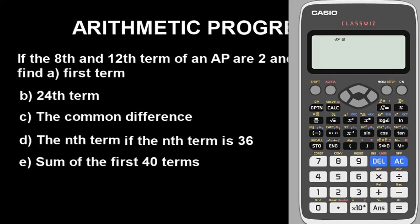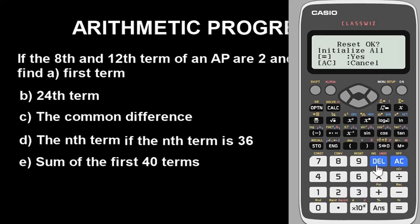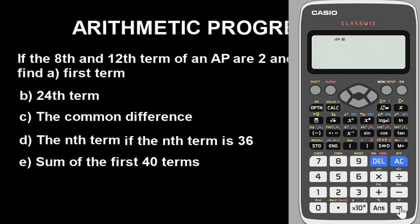The first thing you have to do is to clear the calculator — very important. The purpose of clearing is to put the calculator in default. To do it, press Shift, then button 9 for initialization. When it asks 'Initialize all?', press 3, then press AC to confirm. The calculator has now been cleared.